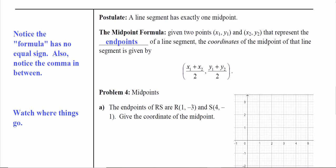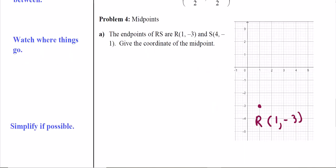Let's try a problem. Here are our two points: R is at (1, -3) and point S is at (4, -1). Those are the endpoints of this line segment, so theoretically the midpoint should be somewhere around this area.